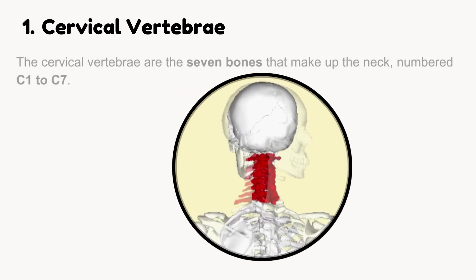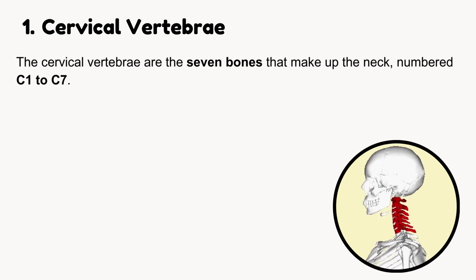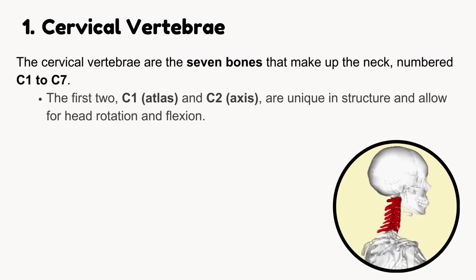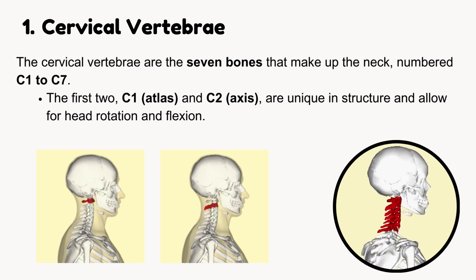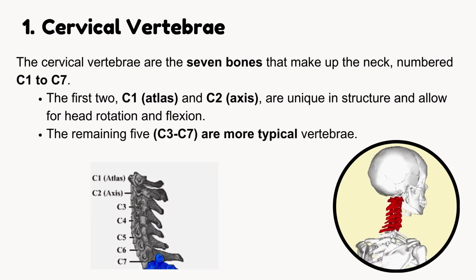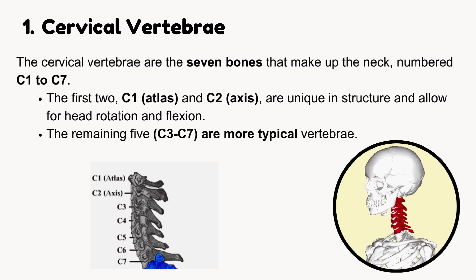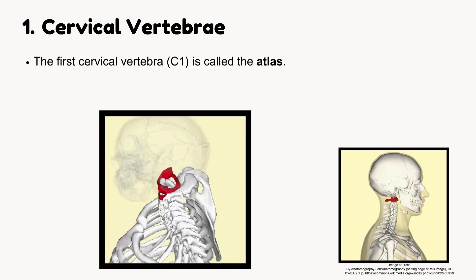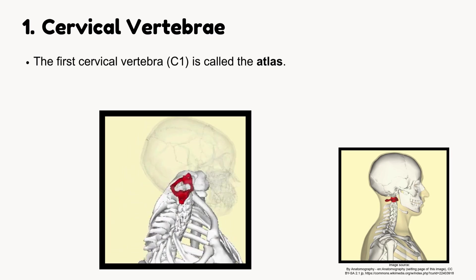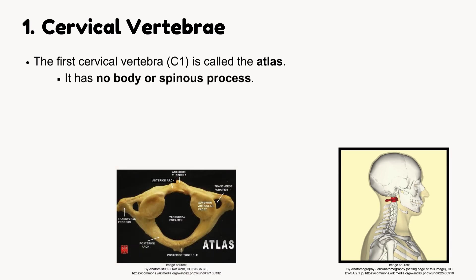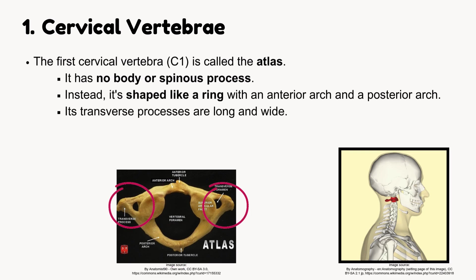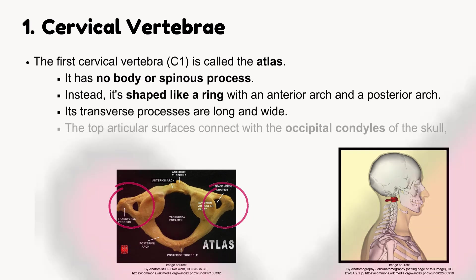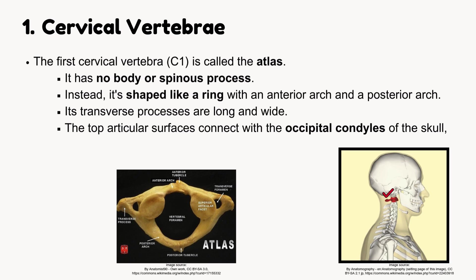Cervical vertebrae. The cervical vertebrae are the seven bones that make up the neck, numbered C1 to C7. The first two, C1 (atlas) and C2 (axis), are unique in structure and allow for head rotation and flexion. The remaining five, C3 to C7, are more typical vertebrae. The first cervical vertebra, C1, is called the atlas. It has no body or spinous process. Instead, it's shaped like a ring with an anterior arch and a posterior arch. Its transverse processes are long and wide. The top articular surfaces connect with the occipital condyles of the skull, and the bottom surfaces connect with C2.